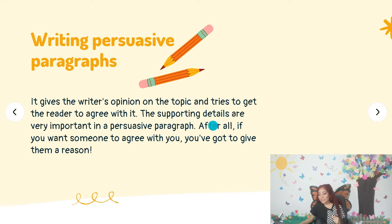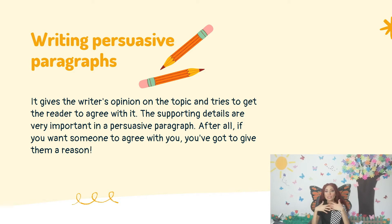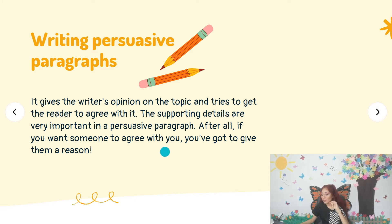The supporting details are very important in a persuasive paragraph. There are different kinds of supporting details you can write. For the microphone example: it's going to make your voice sound louder, it's going to look nice on your desk, and it's not expensive. After all, if you want someone to agree with you, you've got to give them a reason.